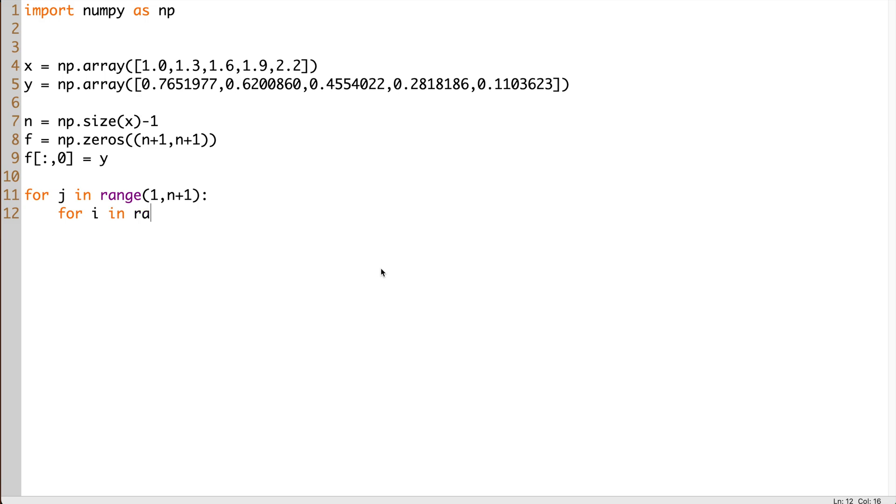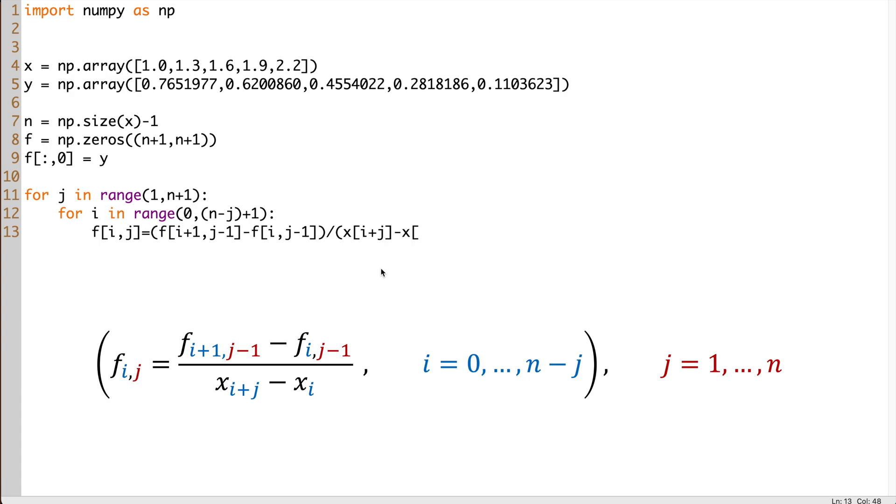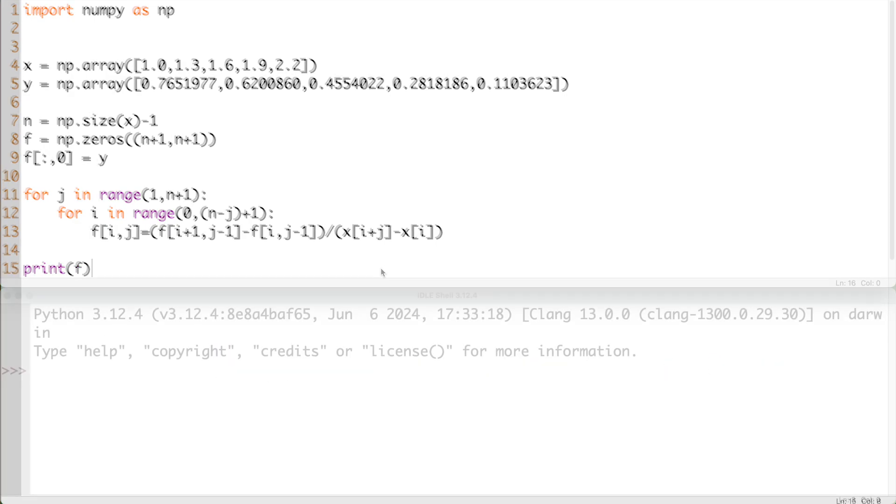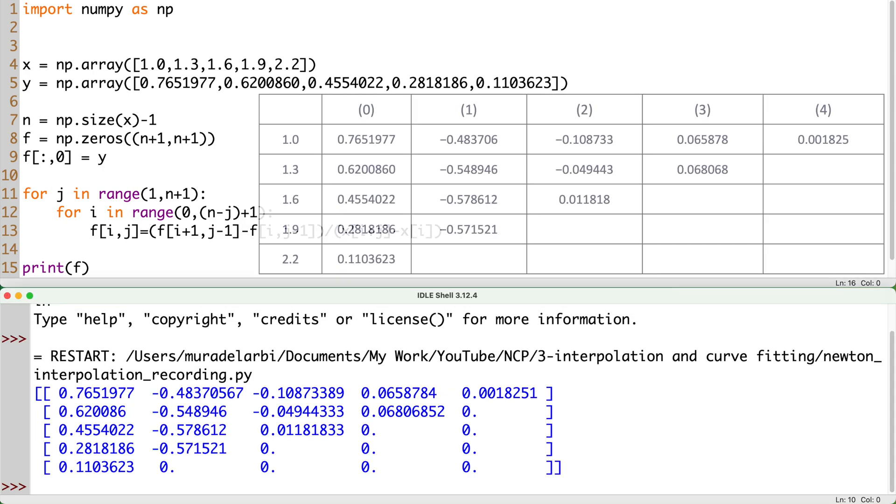Now we start the divided differences procedure with two nested loops, i and j. Note here that we have to add 1 to n in the range, since Python loop always stops one step before the end value. You need to keep this in mind. Now we write the divided differences calculation formula exactly as we wrote it in the algorithm. You can pause the video here and check the subscripts. Before going to the substitution step, let's print the table here and compare it to the manually calculated.